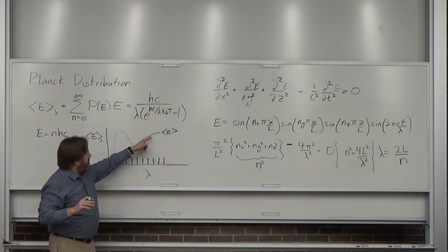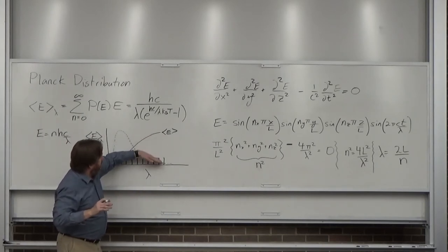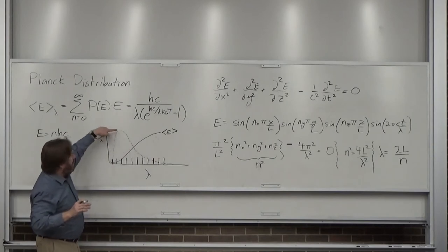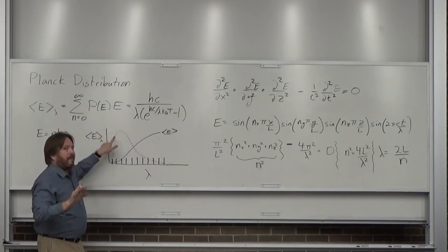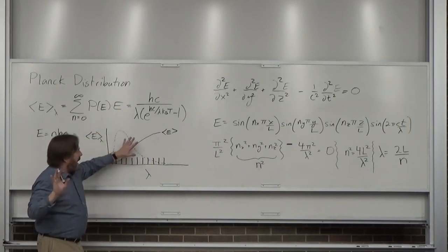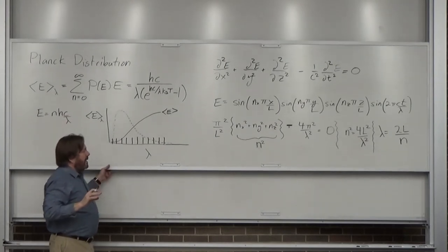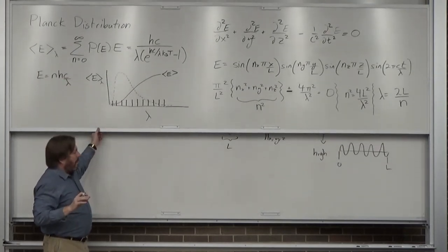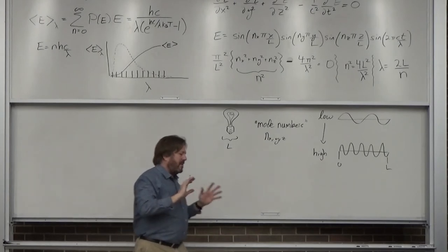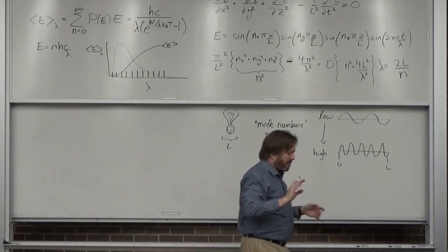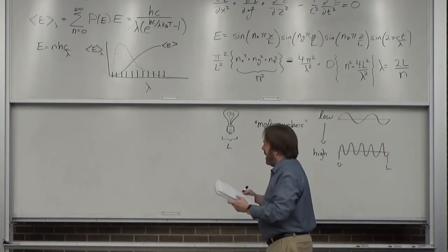The average energy rises and falls — I can see how it gets bent down at long wavelengths, but how does it get bent up and then back down at short wavelengths? That's the new part I need to explain. Here's what's happening — I'm going to make a little graph for this.